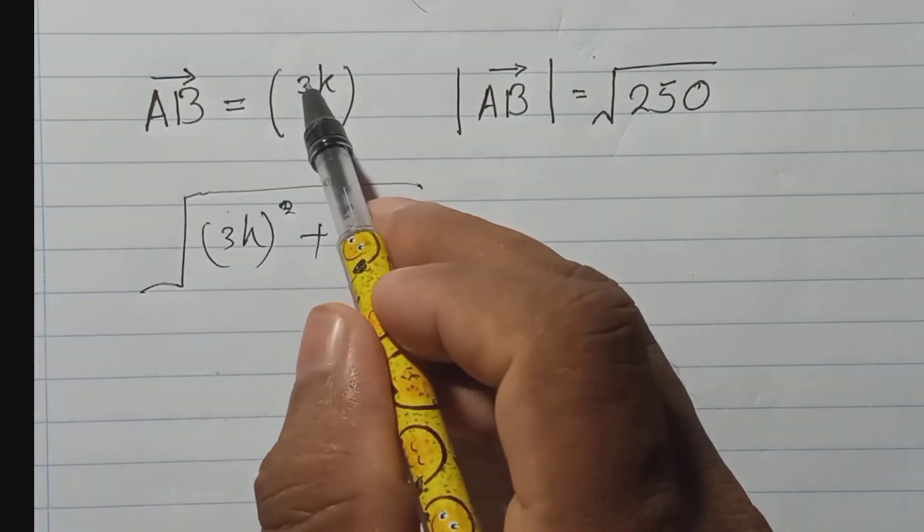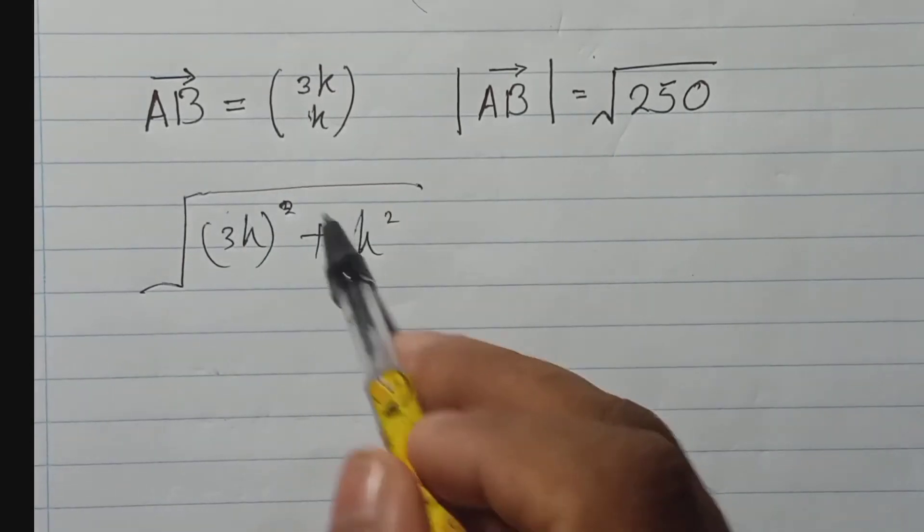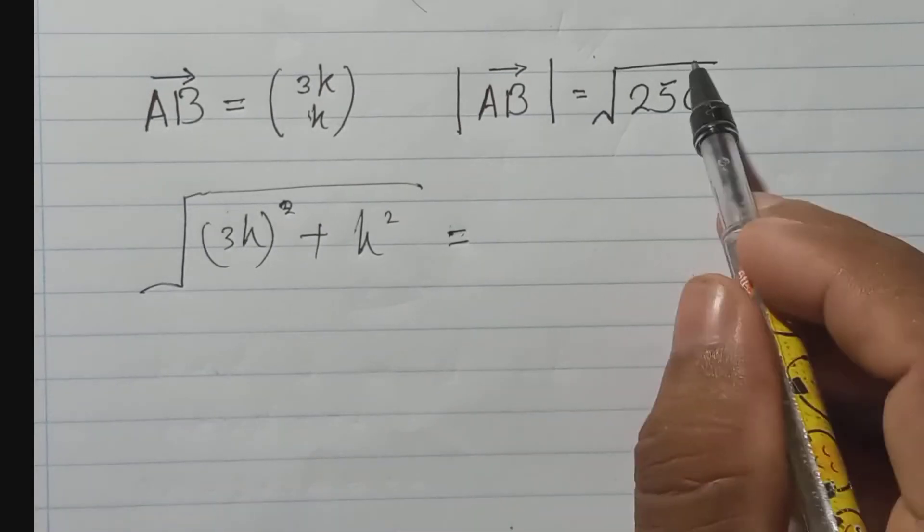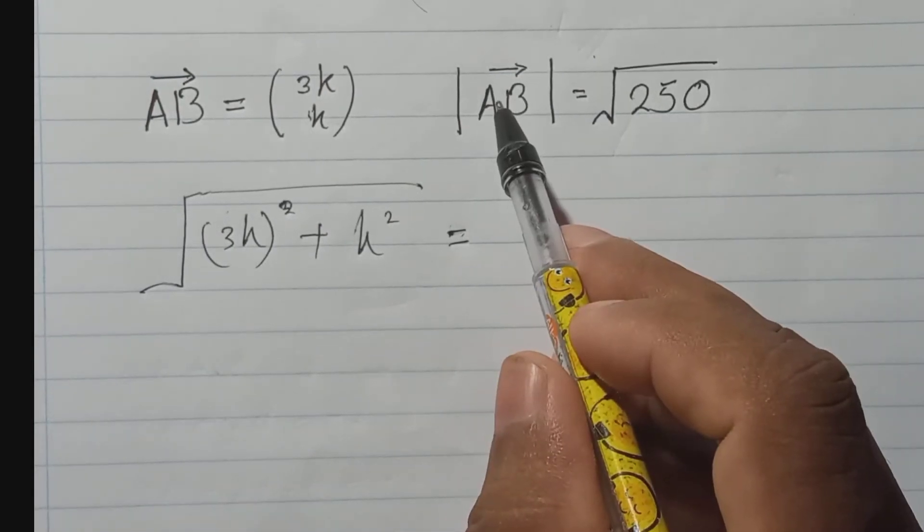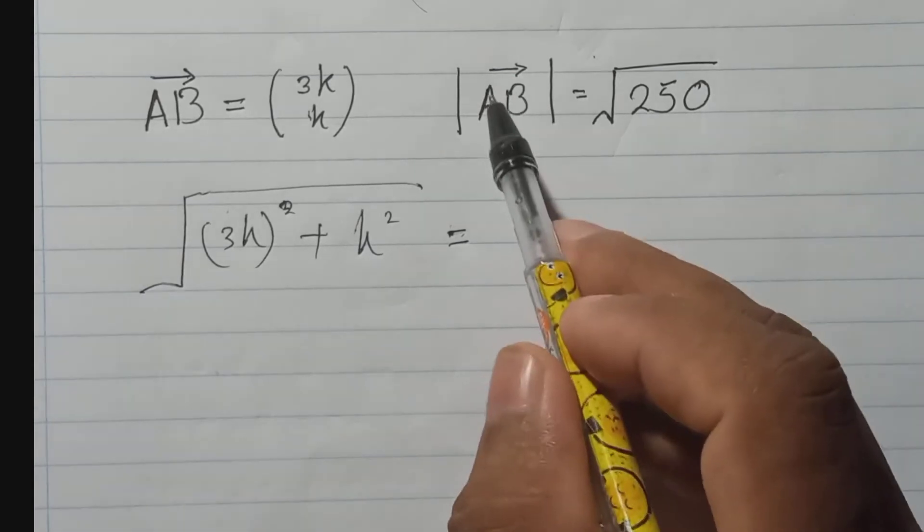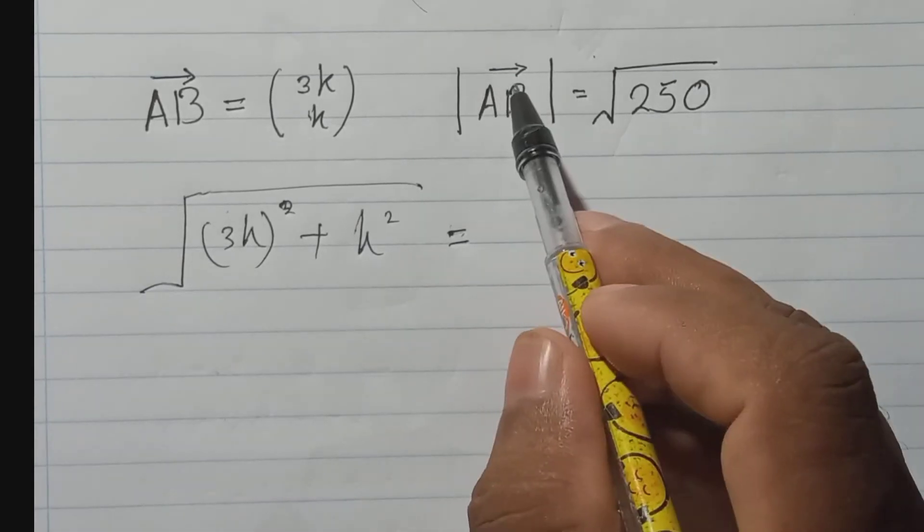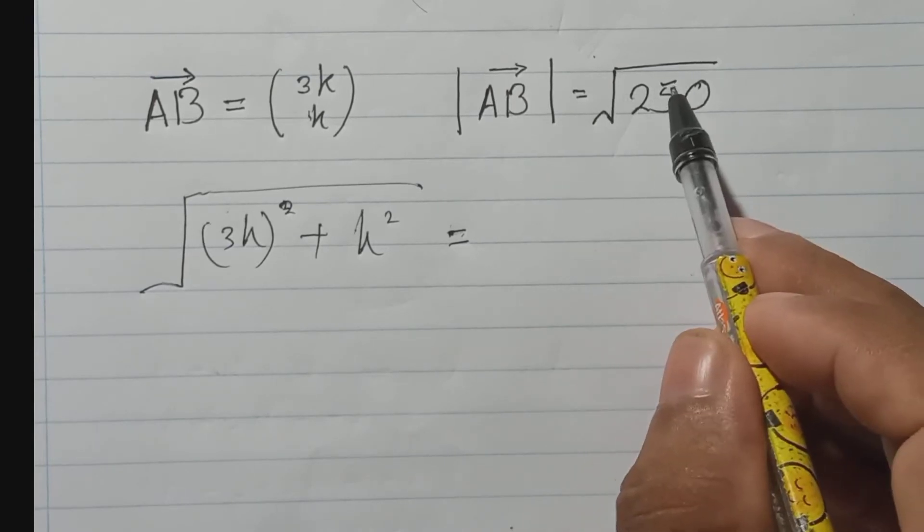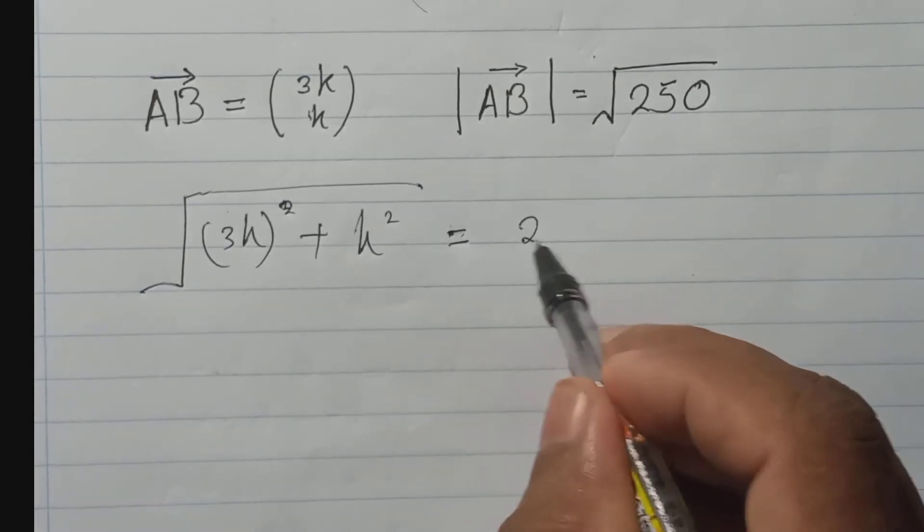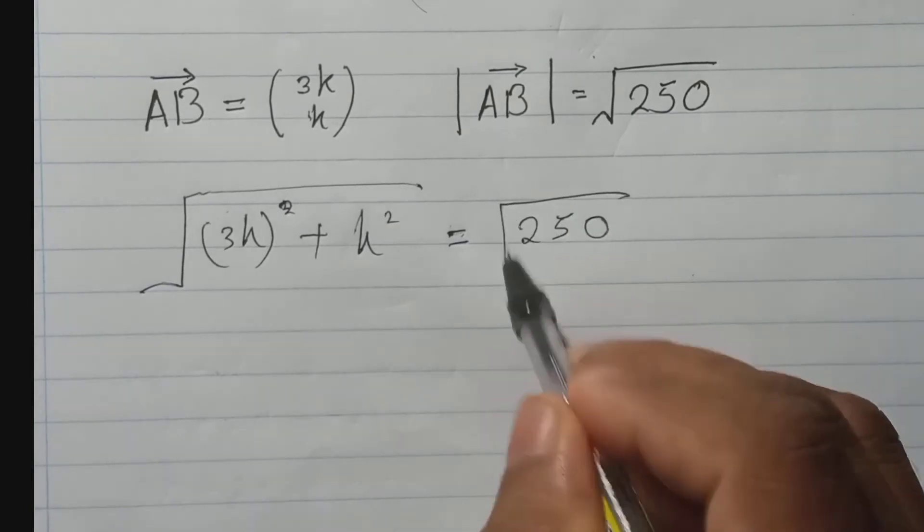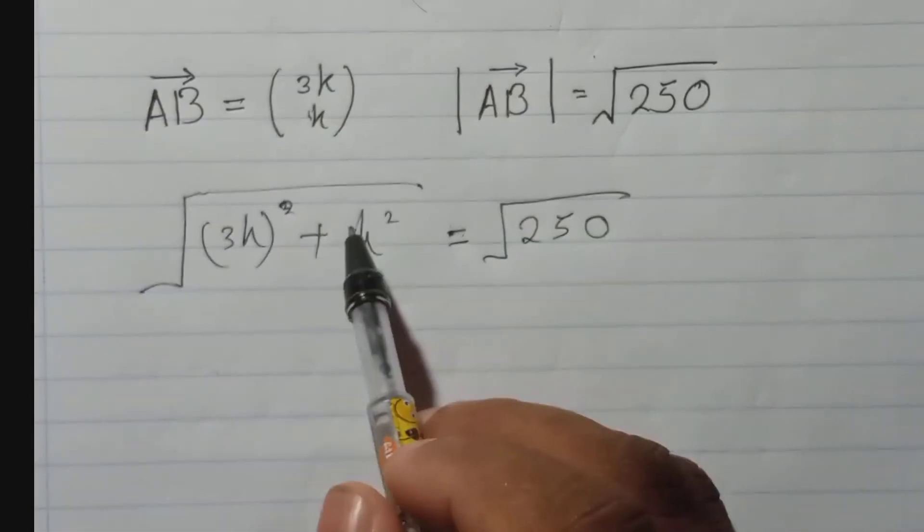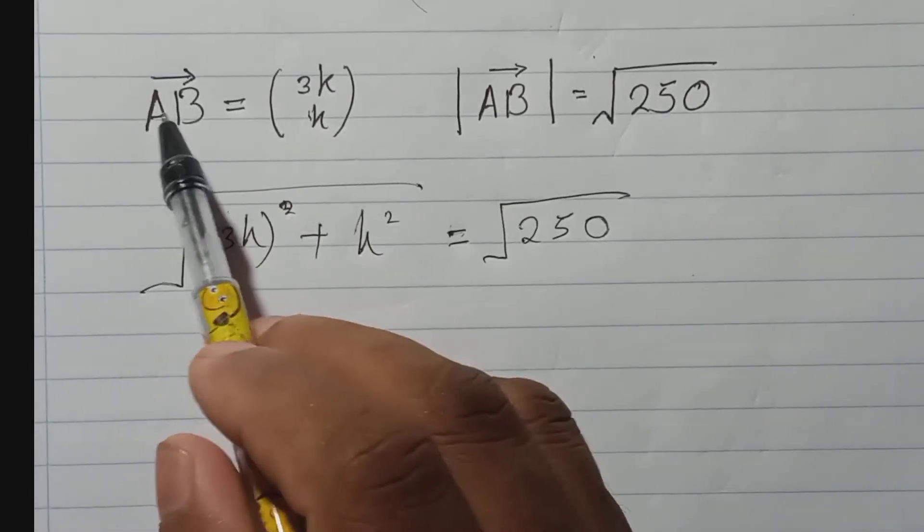So I wrote here first one square plus second one square and square root, this will be equal to this. Because they tell here, without consider the sign, magnitude of AB, size of the AB will be square root 250. So I will write that square root 250 like this. Here also this one represents magnitude of AB.